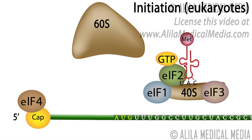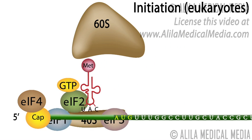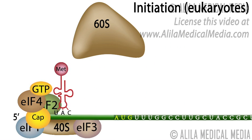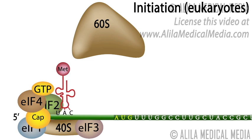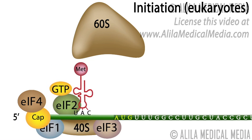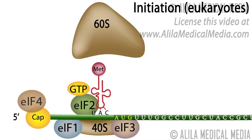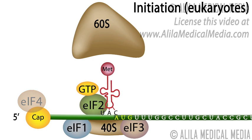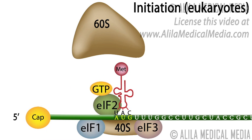This complex then attaches to the cap structure at the 5' end of an mRNA and scans for the start codon AUG. The process is mediated by several initiation factors.